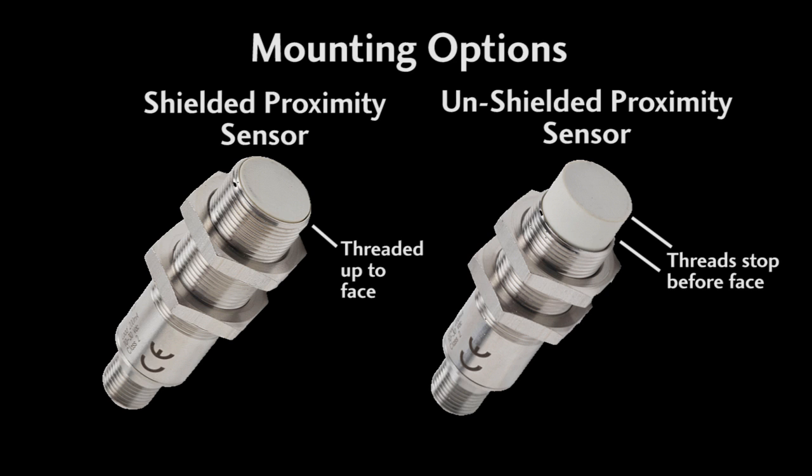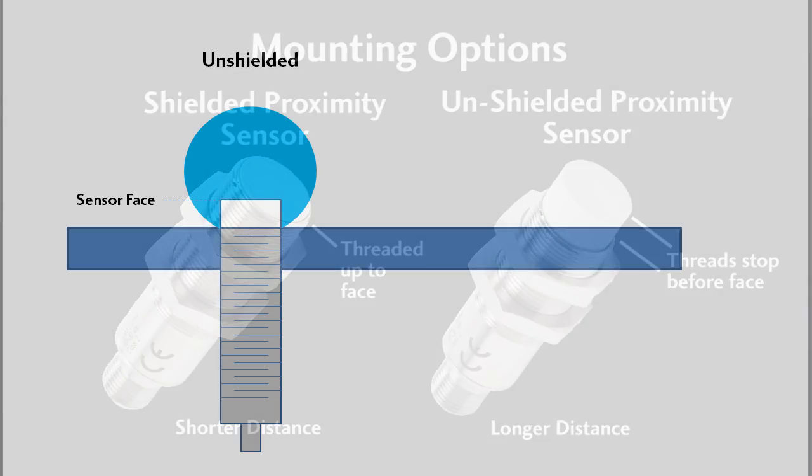The shielded flush mount sensors typically have a shorter sensing distance. The reason for this is the sensing region actually starts below the face of the sensor – kind of like this.